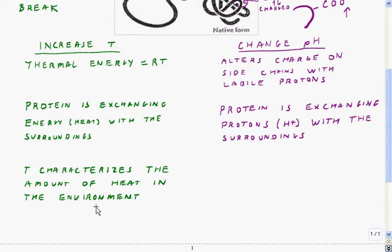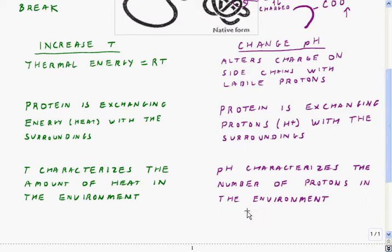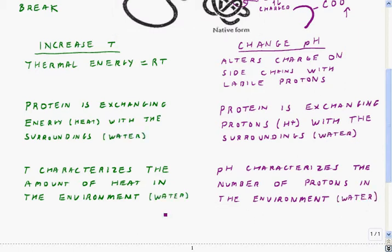For heat exchange, the environment can be characterized by the temperature — the temperature indicates how much heat there is in the environment. The number of protons in the environment is characterized by pH. That's what we're going to talk about next: what is this thing we refer to as pH and how does it characterize the number of protons in the environment? By environment, we mean water.